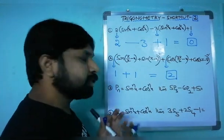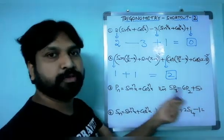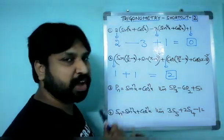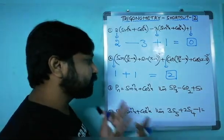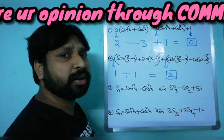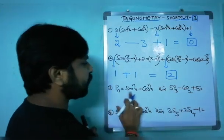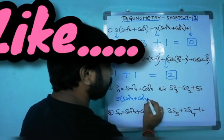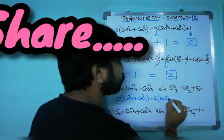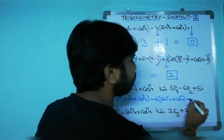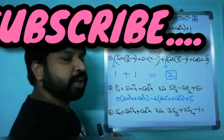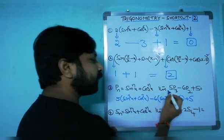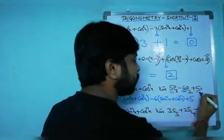In 2014 they asked: if pₙ = sinⁿx + cosⁿx, find 5p₃ - 6p₂ + 5. Here p₃ means sin³x + cos³x and p₂ means sin²x + cos²x. Applying the shortcut — same powers, use constants only: 5(1) - 6(1) + 5 = 5 - 6 + 5 = 4. The answer is 4.